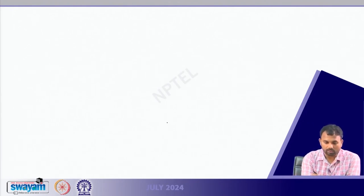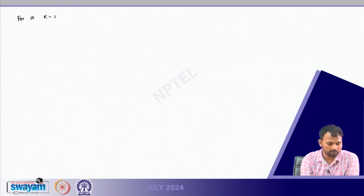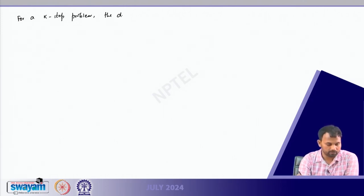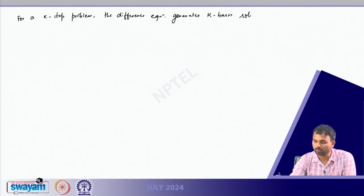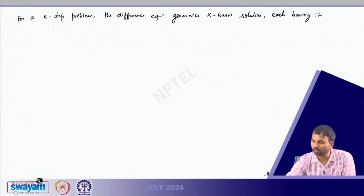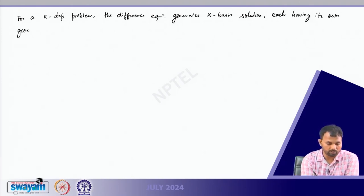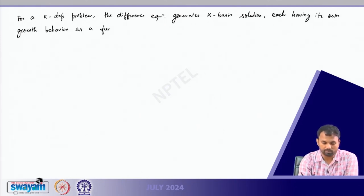For a k-step problem, the difference equation generates k basis solutions, each having its own growth behavior as a function of hλ.